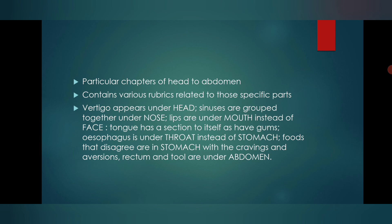The second chapter is of head, and from head to the chapter of abdomen, the chapters are based on specific location or organ. Special points to note: vertigo appears under the chapter of head; sinuses are included under the chapter of nose; lips are given under the chapter of mouth instead of face; tongue and gums have separate chapters. The esophagus is given under the chapter of throat instead of stomach, and cravings, aversions, and foods that disagree are given in the chapter of stomach.